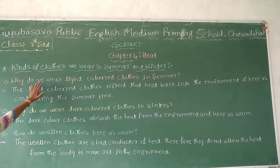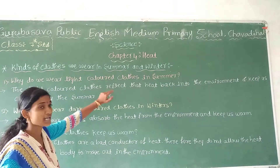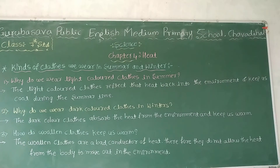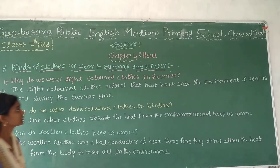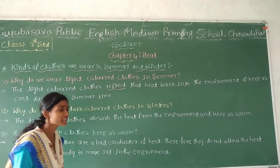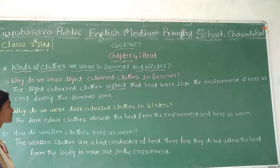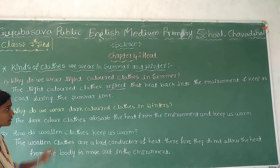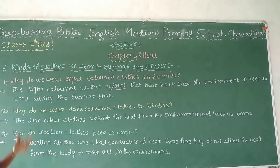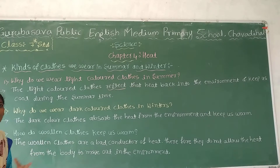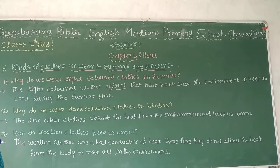The first question is: why do we wear light colored clothes in the summer? The answer is that light colored clothes reflect the heat back into the environment. During the summer time, light colored clothes are reflected and dark colored clothes absorb heat from the environment, keeping our body cooler.